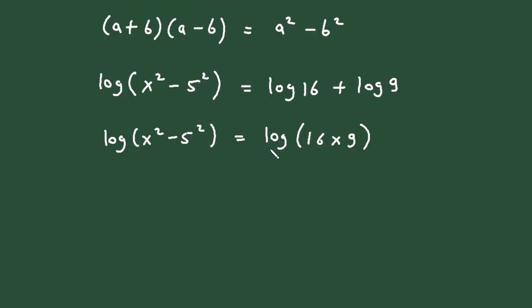If we take antilog on both sides, this log and this log will get cancelled, so it will be x² - 5² is equal to 16 × 9.